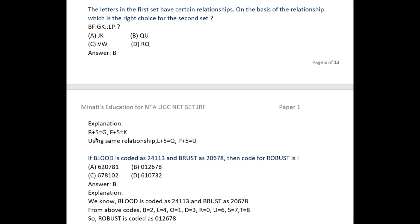B plus if you proceed five places you will get G. Just like this, F if you proceed five places you will get K. So like this, after L you proceed five places you will get Q, and after P you proceed five places you will get U. So the right answer is option B.